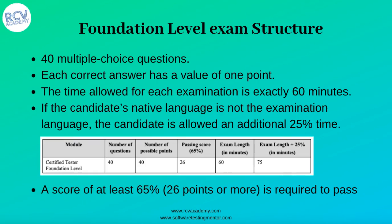The ISTQB foundation level exam consists of 40 multiple-choice questions. Each correct answer has a value of one point, and the time allowed for the examination is 60 minutes. The maximum number of possible points is 40. The passing score is 65 percent, which means you have to answer at least 26 questions correctly out of 40.